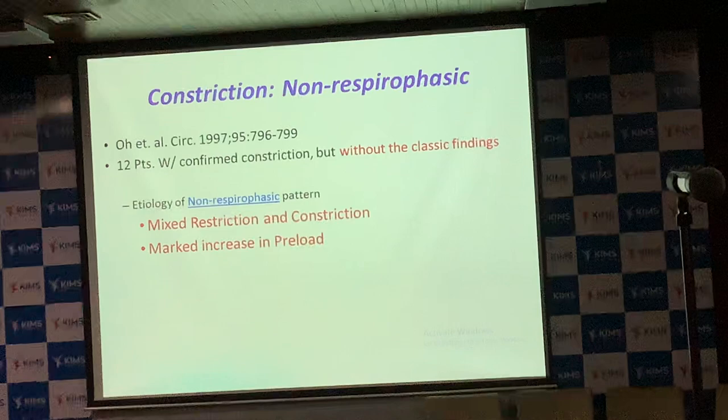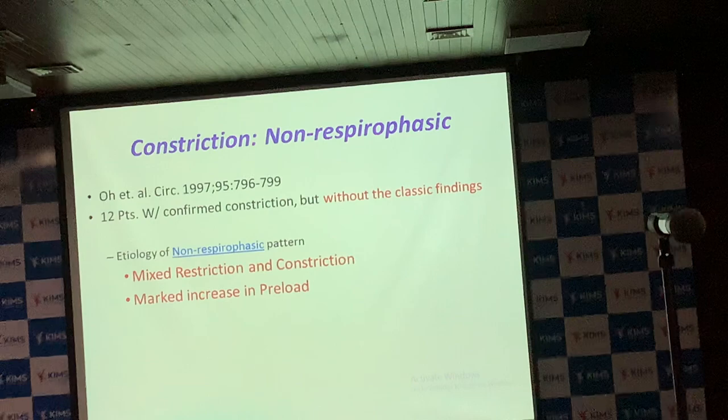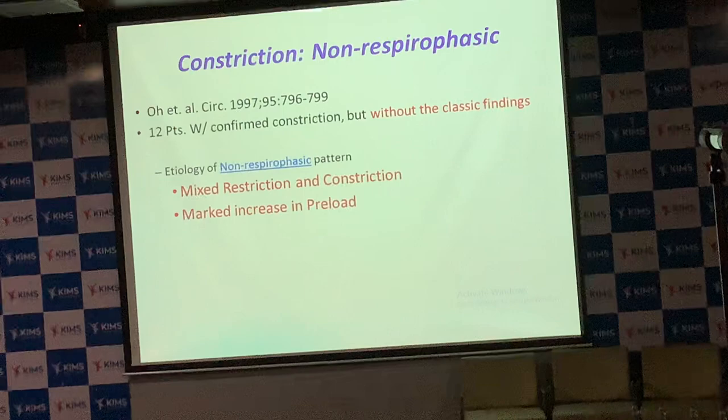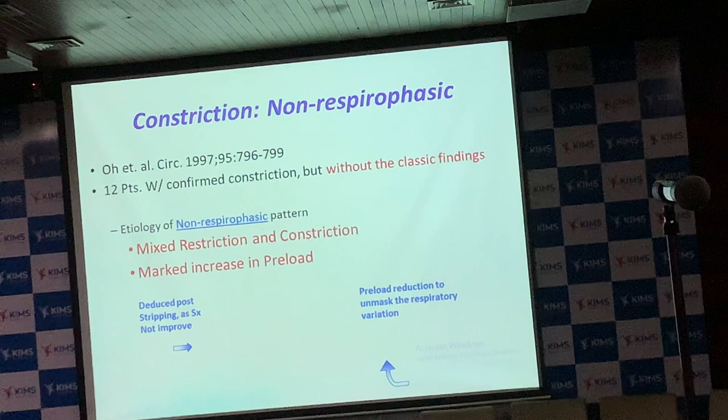Another approach short of giving diuretics is to study the patient in the sitting posture rather than supine. By making them sit up, you reduce the preload — decreasing pulmonary venous flow — and may be able to bring out the respirophasic changes typical for constrictive pericarditis. This should be part and parcel of your echocardiographic examination.